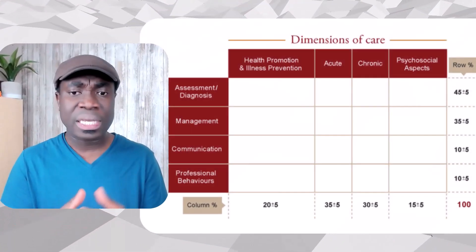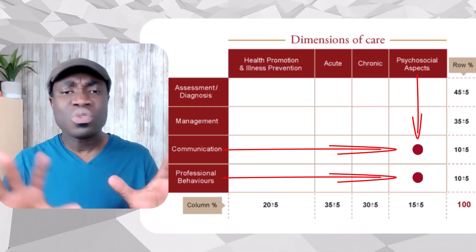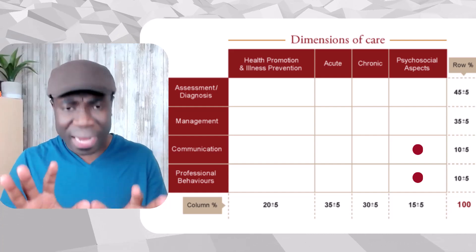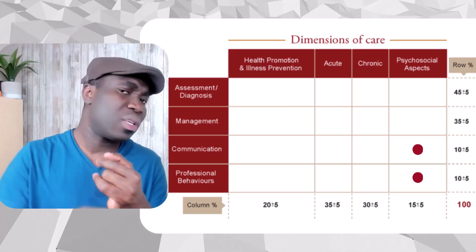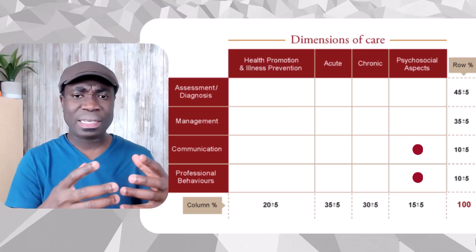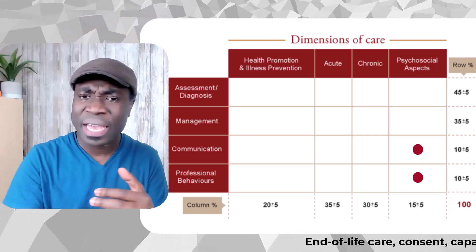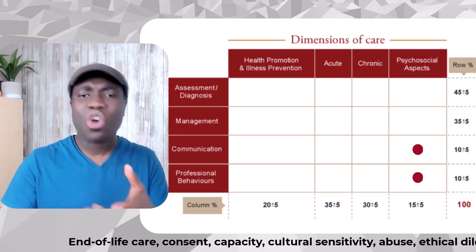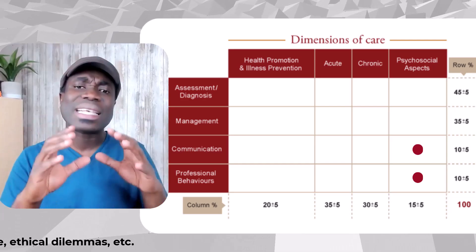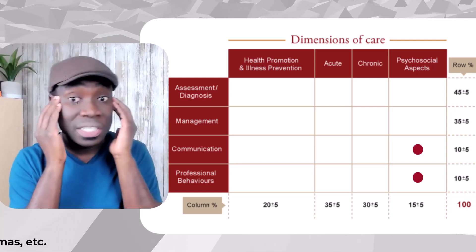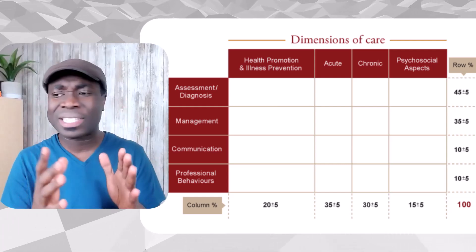The third zone, which is also very important, is communication plus ethics plus psychosocial behavior — about 45 questions. These test your ability to manage people, not just pathologies. Scenarios include end-of-life care, consent, capacity, cultural sensitivity, abuse, and ethical dilemmas. Success here depends on your clinical judgment, how empathetic you are, and your professionalism — not just memorization of medical facts.